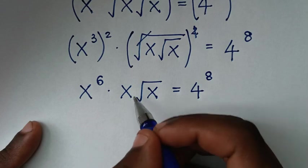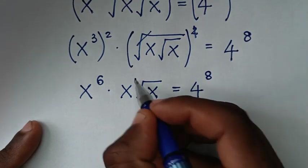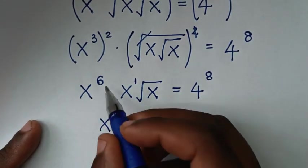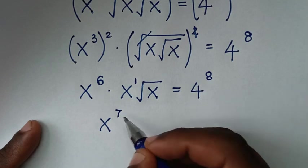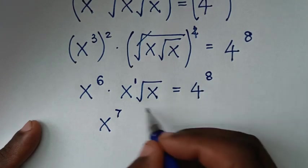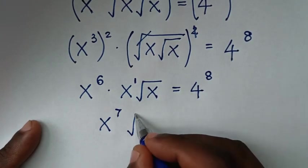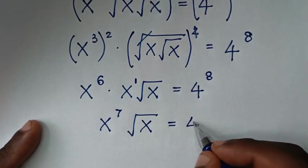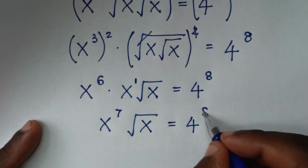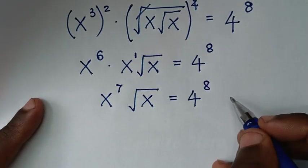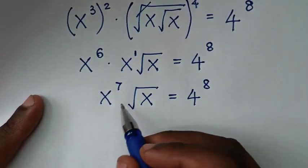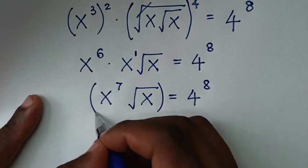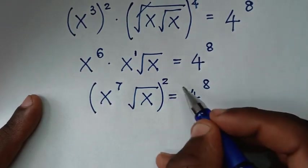In the next step, this x is same as x to the power of 1, so it will be x to the power of 6 plus power of 1 is power of 7. Then, times square root of x is equal to 4 to the power of 8. In the next step, to remove this square root here, we'll square again on both sides.